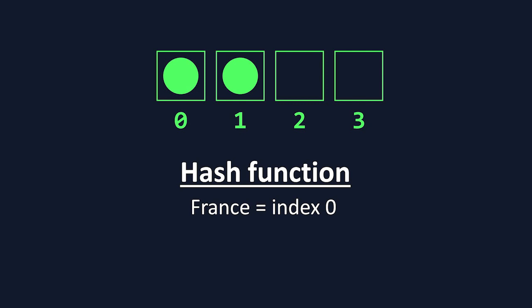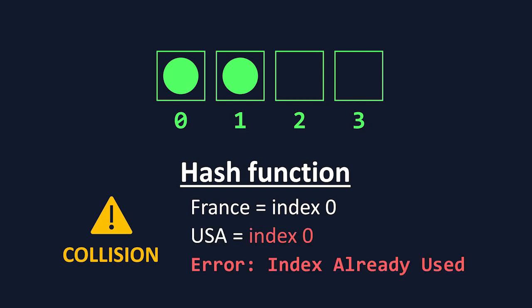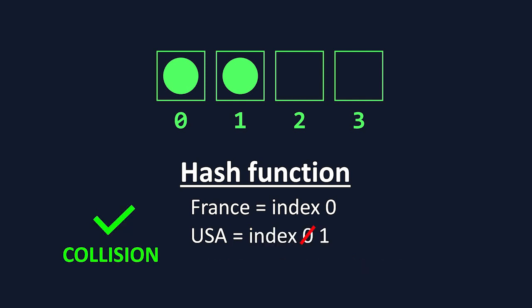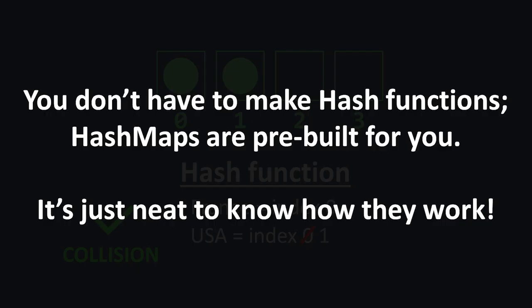These hash functions can get complex, especially as they have to tackle issues that come up when mapping data to indices. The most common issue that comes up is called a collision, and occurs when a hash function tries to assign a piece of data to an already used index. In this case, the hash function has to have some efficient way to reassign this data to a different, non-used index. Hash functions are a bit outside of the scope of this video, and in almost all modern programming languages, HashMaps are already implemented, so you don't have to worry about building them yourselves.